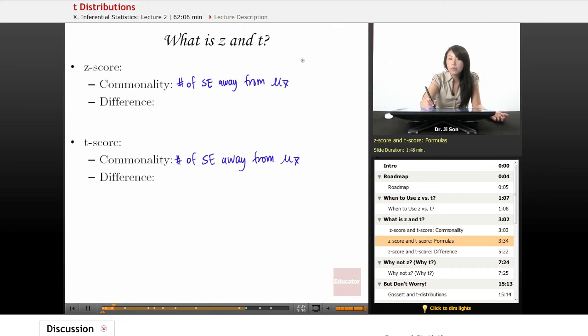For instance, one way we could write the Z formula is like this. Z equals X-bar minus mu, or mu sub X-bar, they're the same.